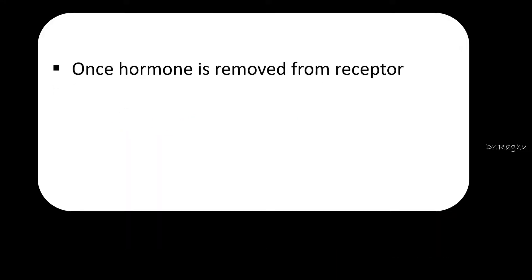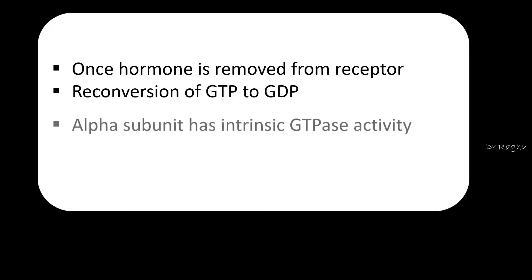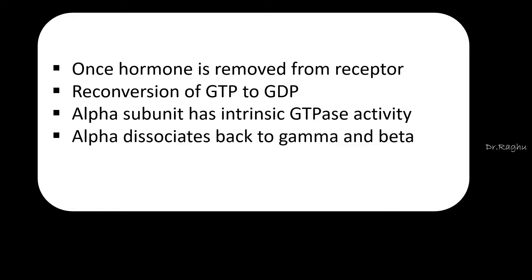Now what is going to happen once the ligand is removed from the receptor? There is reconversion of GTP to GDP. The GTP is getting converted back to GDP. This occurs because the alpha subunit of the G-protein has an intrinsic GTPase activity. Once the GTP has got converted back to GDP, the alpha subunit which had dissociated from the gamma and the beta subunit is going to come back and attach back to the gamma and the beta subunit. So this is how the G-protein coupled receptor is going to act.